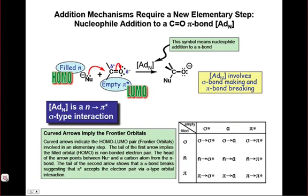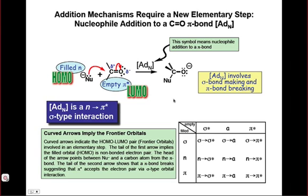Before we can discuss addition to the carbonyl group in great detail, we need to take a look at a new elementary step, ADN. ADN is the addition of a nucleophile across a polarized pi bond with the formation of a nucleophile carbon bond. The curved arrows for this process are drawn here.